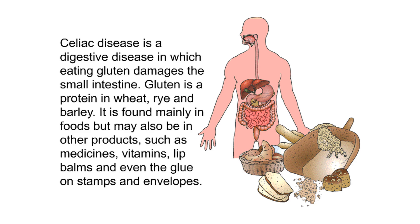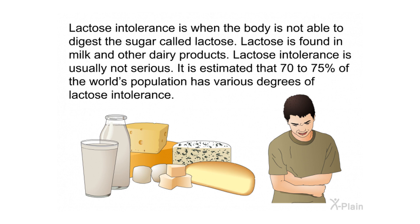Gluten is found mainly in foods but may also be in other products such as medicines, vitamins, lip balms, and even the glue on stamps and envelopes. Lactose intolerance is when the body is not able to digest the sugar called lactose. Lactose is found in milk and other dairy products. It is estimated that 70 to 75 percent of the world's population has various degrees of lactose intolerance.